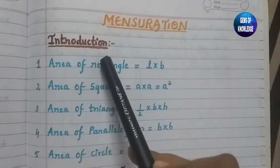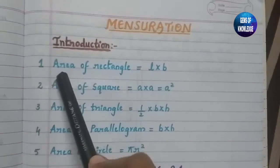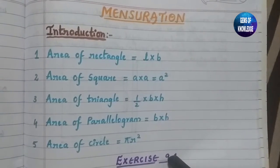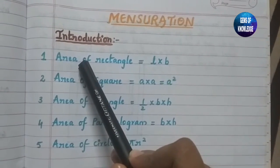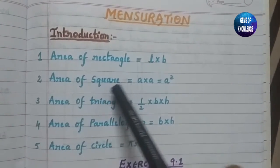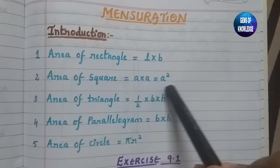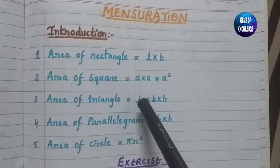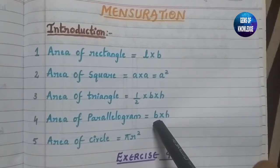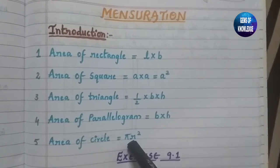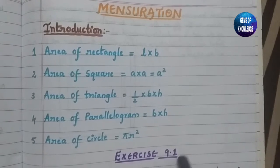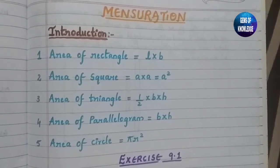Before starting with the exercise, let us know a few formulas. In the introduction I have written five formulas related to Exercise 9.1. The basic common formulas are: area of rectangle = l × b, area of square = a², area of triangle = ½ × base × height, area of parallelogram = base × height, and area of circle = πr².